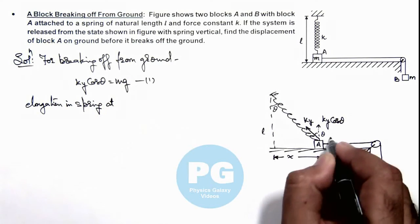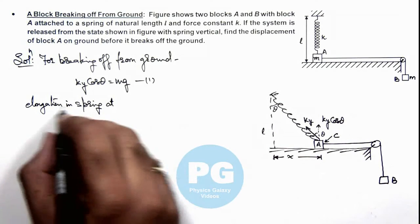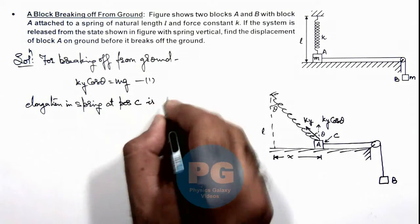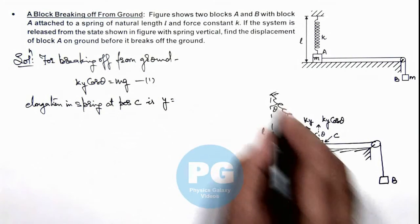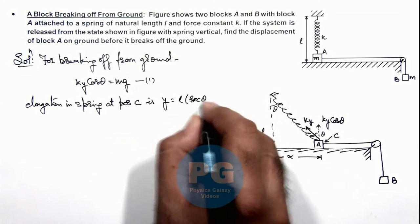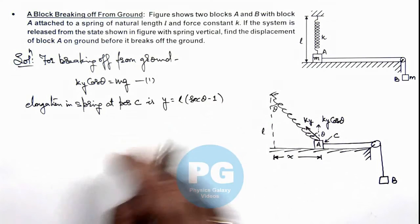This position is say C. Then elongation in spring at position C is, this y can be written as l sec theta minus l, so this is l multiplied by (sec theta minus 1). This is the elongation in spring.